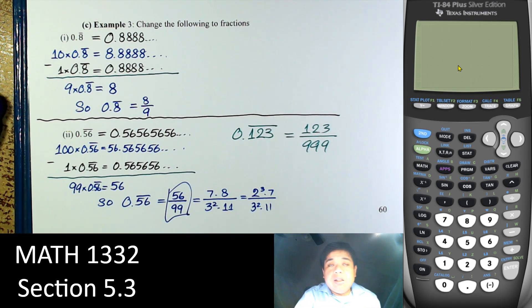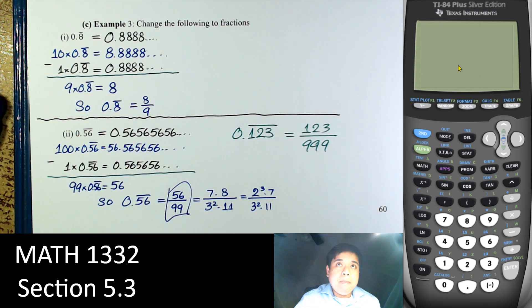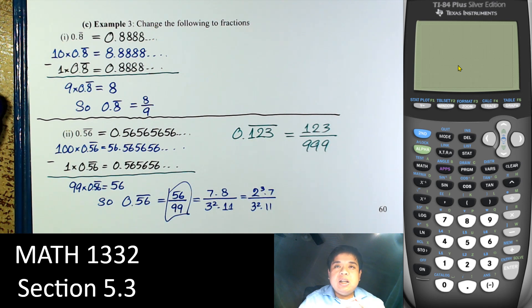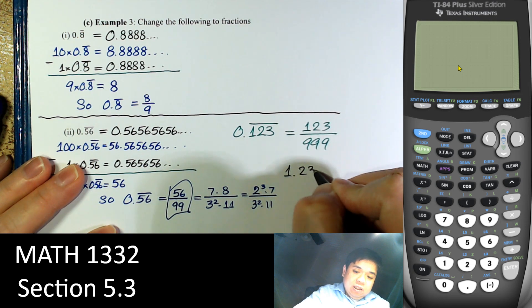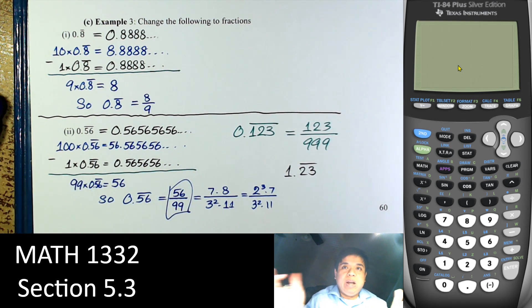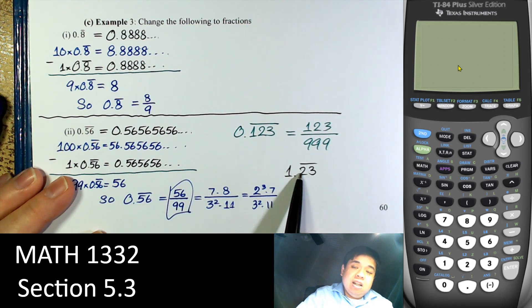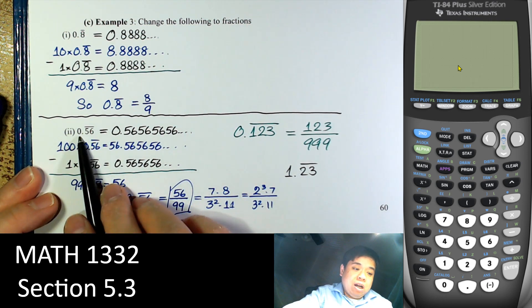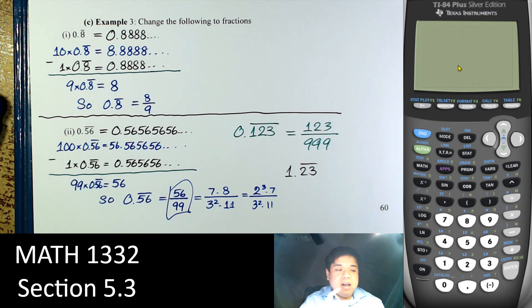The bottom line is: it depends on how many digits are repeating — divide by that many nines. The key part is it must be repeating right after the decimal point. If the repeating part doesn't start right away, multiply to shift it first, then subtract.